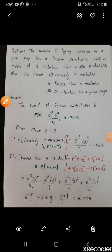We see a problem on Poisson distribution. The question is: the number of typing mistakes on a given page has a Poisson distribution with a mean of 3 mistakes. What is the probability that she makes exactly 7 mistakes, fewer than 4 mistakes, and no mistakes on a given page?